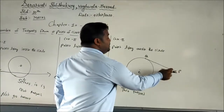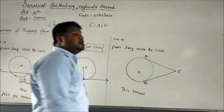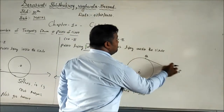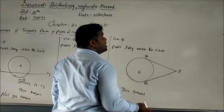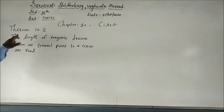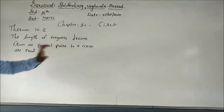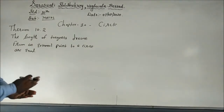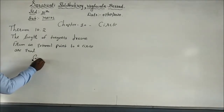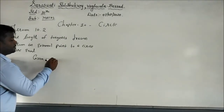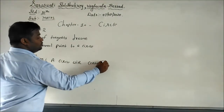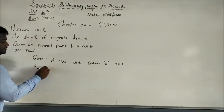Now we move to Theorem 10.2. When a point is taken outside the circle and two tangents are drawn, both tangents are equal in length: PQ is equal to PR. Let's write the 'Given' section. Given: a circle with centre O and a point P external to the circle.